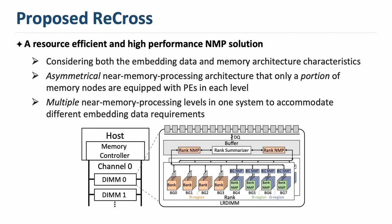For example, we divide the memory into three regions, each of which is featured with rank-level, bank-group-level, or bank-level near-memory processing. Then, for embedding data with a higher access frequency, we place it in the memory region with higher memory parallelism. In this way, we not only reduce the number of processing units, but also naturally solve the load imbalance problem. For more information, please refer to our paper.